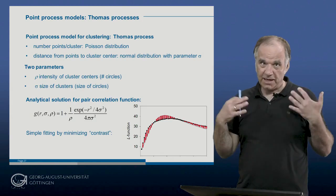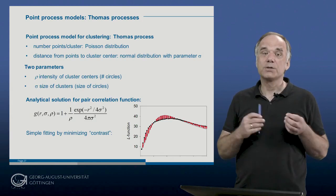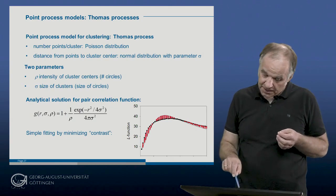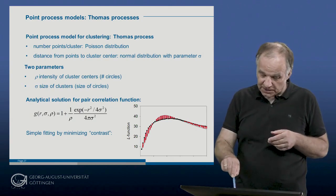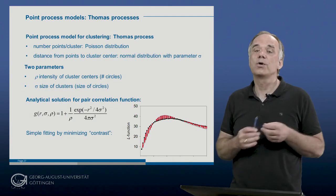And here you see now the difference. And I vary the two parameters of this process until I find a parameter combination where this difference is minimal. For this reason it's called minimum contrast.